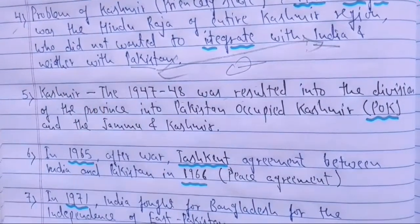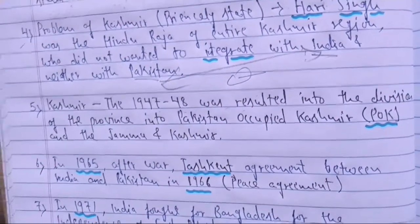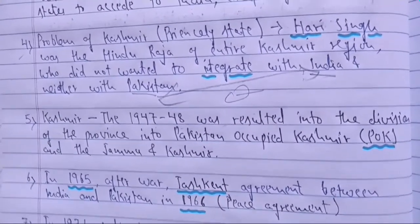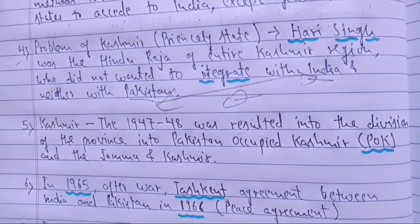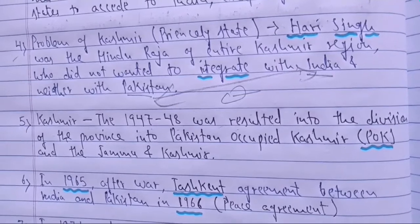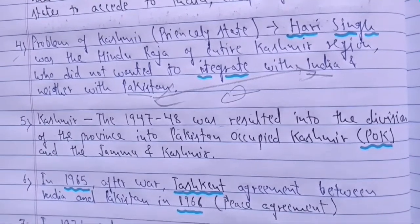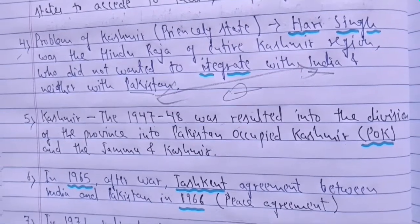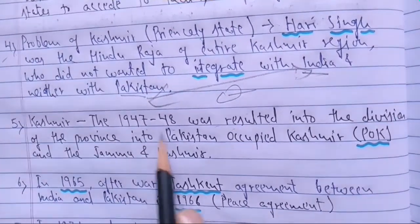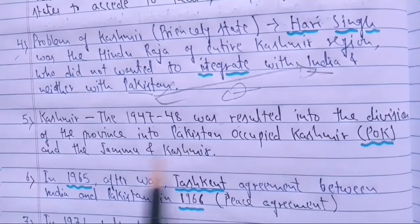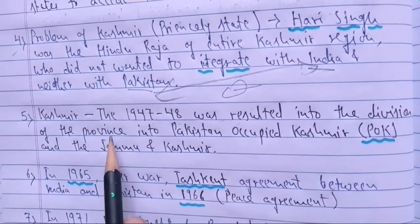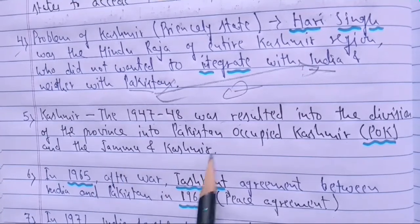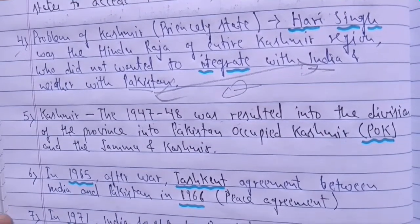To recap from the map: Pakistan attacked Kashmir where Raja Hari Singh was the ruler. Pakistan took over some part of Kashmir, now called Pakistan Occupied Kashmir (POK). The Indian part was called Jammu and Kashmir. So the war of 1947-48 resulted in the division of the province of Kashmir into Pakistan Occupied Kashmir and Jammu and Kashmir.